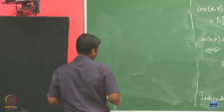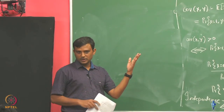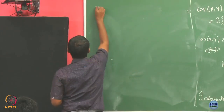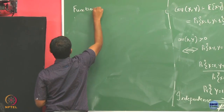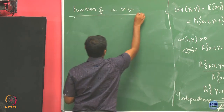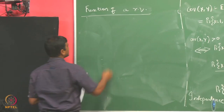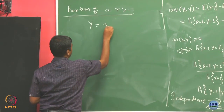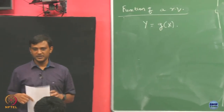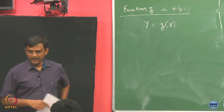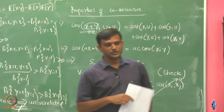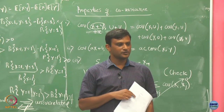Now, how to find the distribution of such a random variable? Let us start with a function of a single random variable, then we will move to how to find the distribution of a set of random variables. Suppose you have a random variable x, and you are interested in some function g of x, and let us call y = g(x).